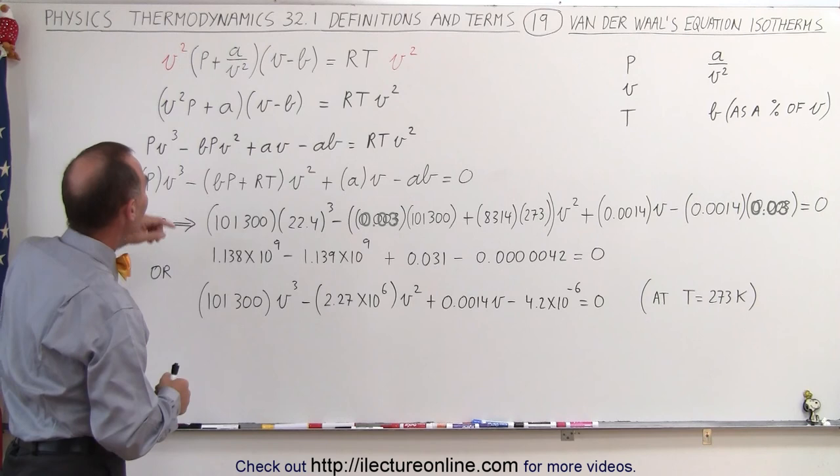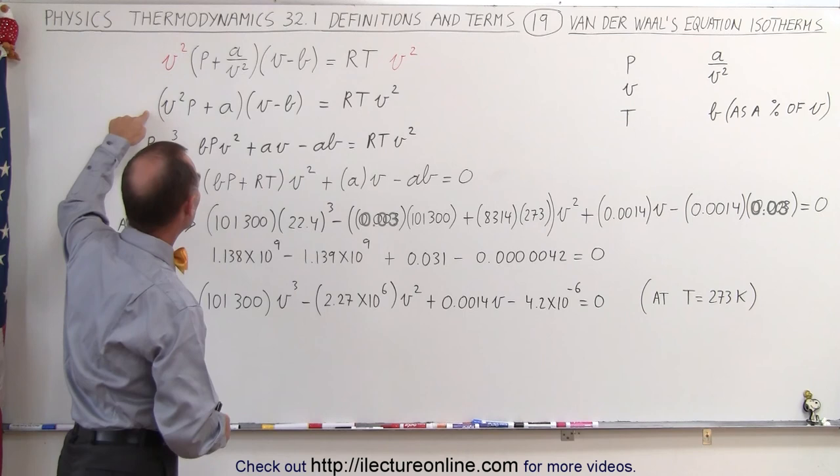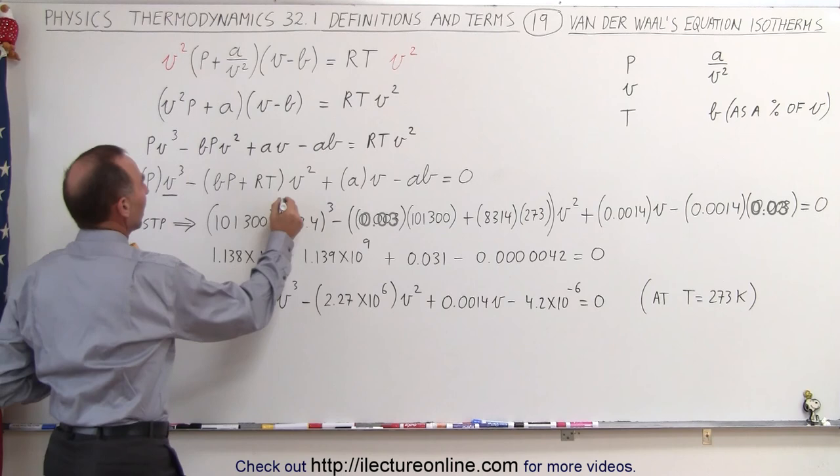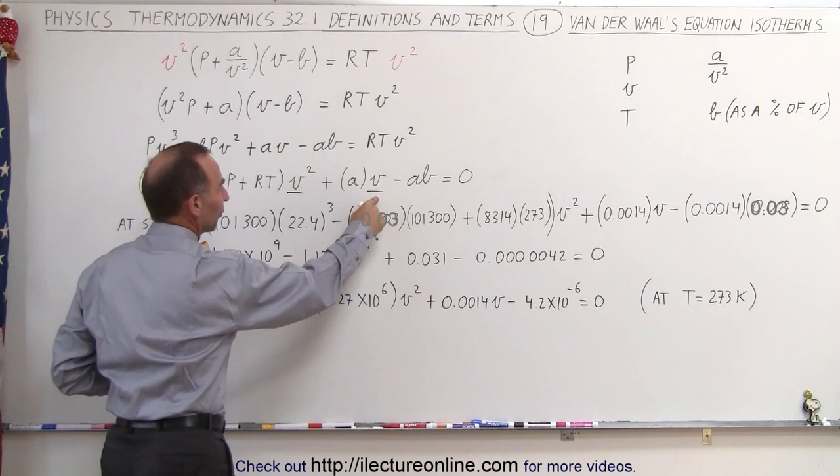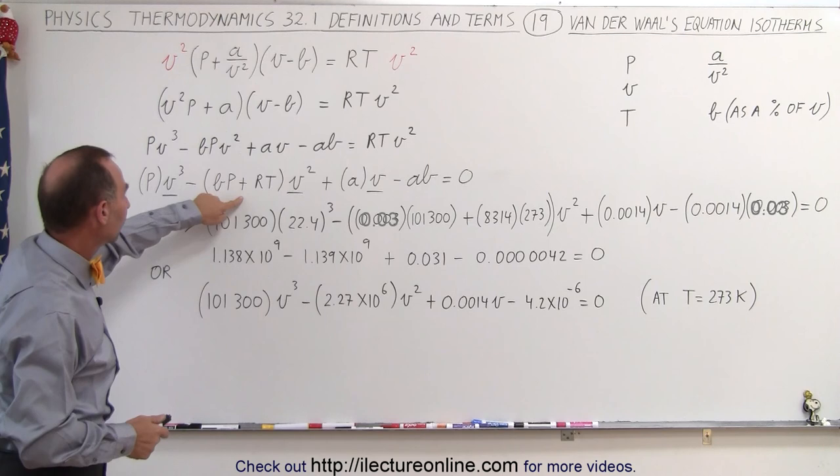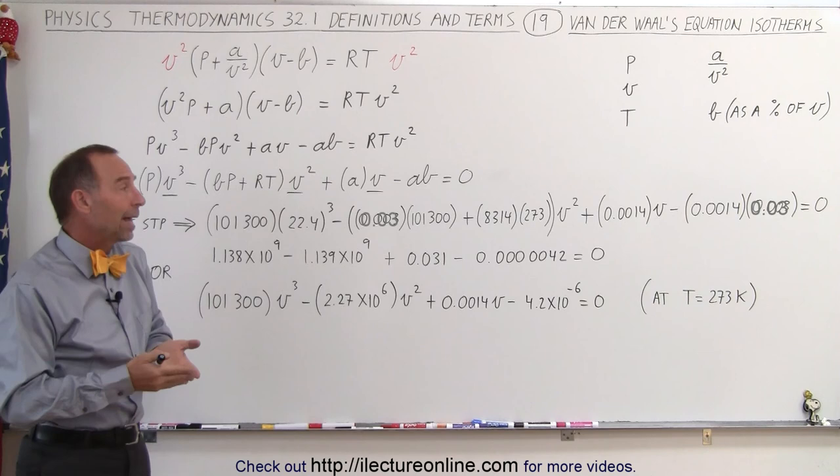If we take the Van der Waals equation and multiply both sides by V squared and rearrange the terms, we can express the equation as a function of V. We have the V cubed term, V squared, V to the first power, and a constant. Notice these are the coefficients of V cubed, V squared, V, and then the constant by itself.